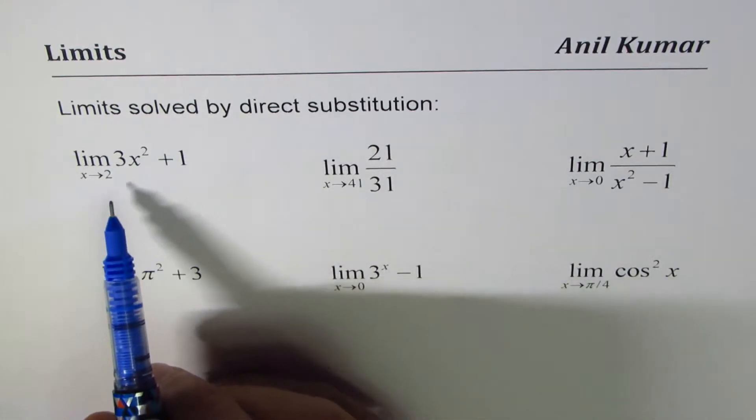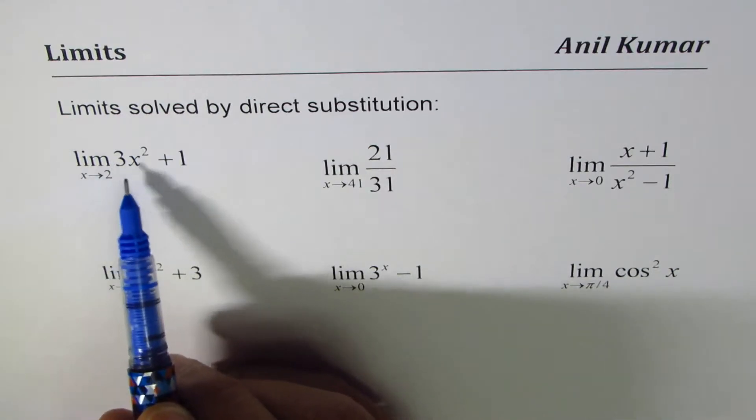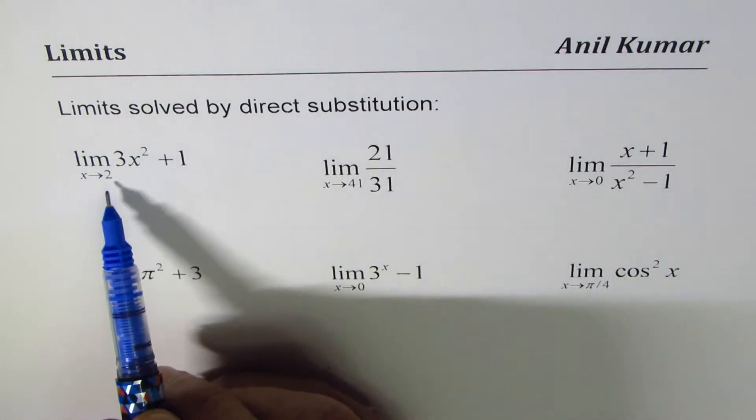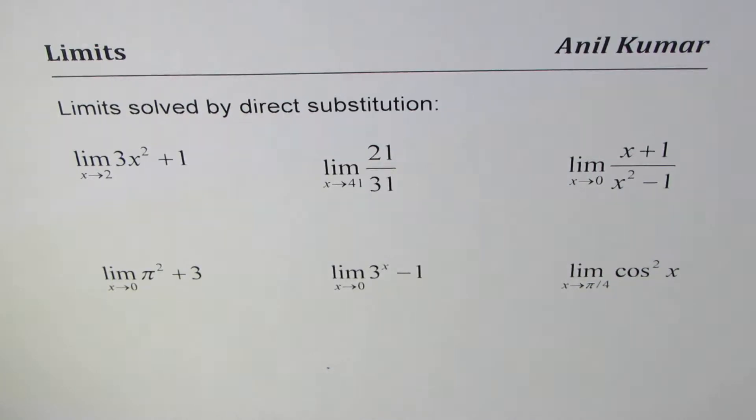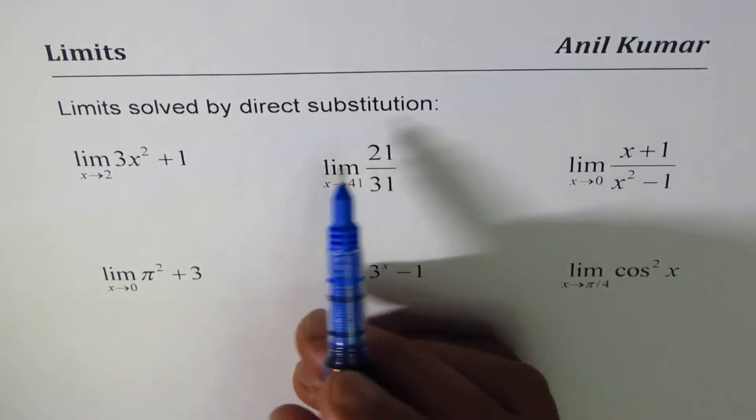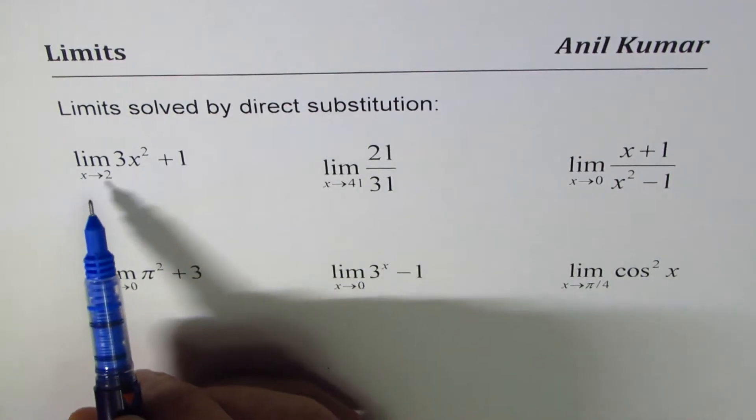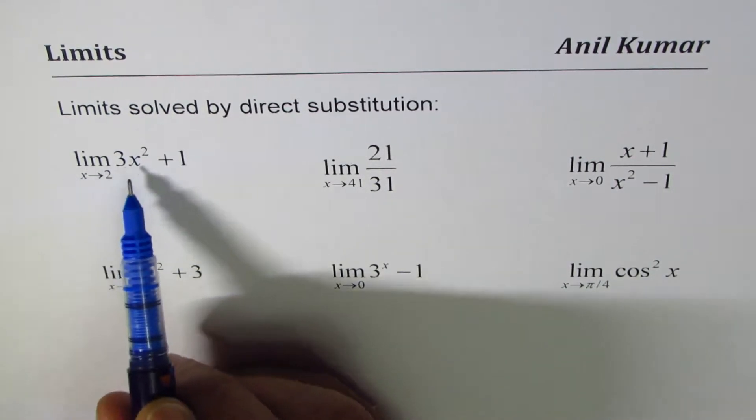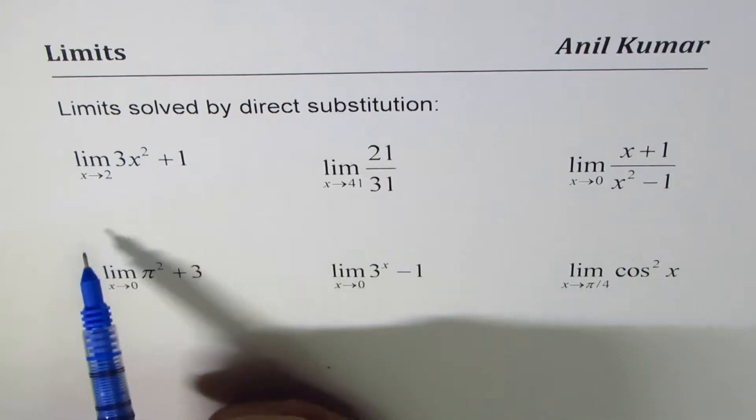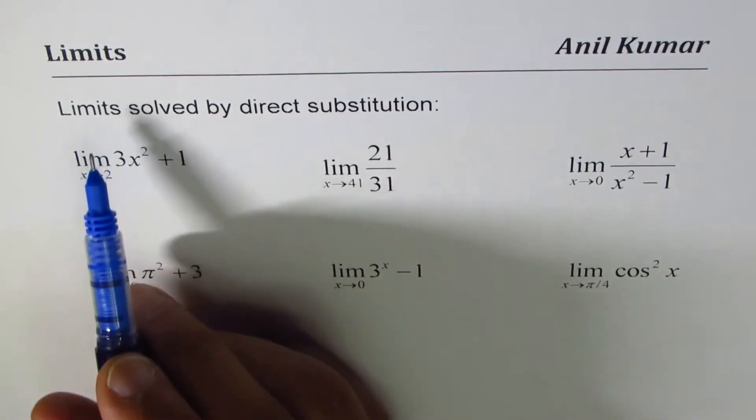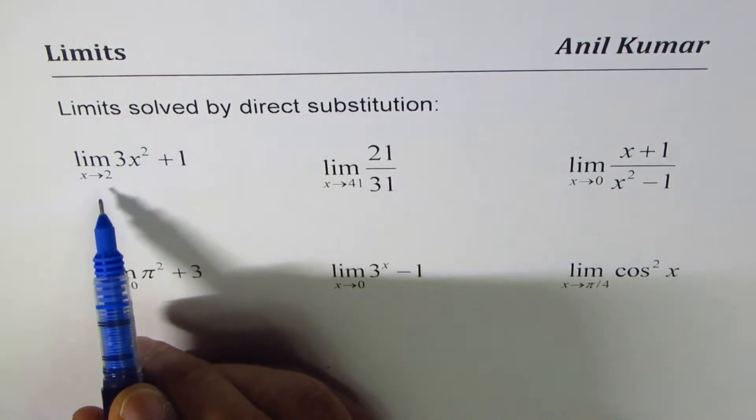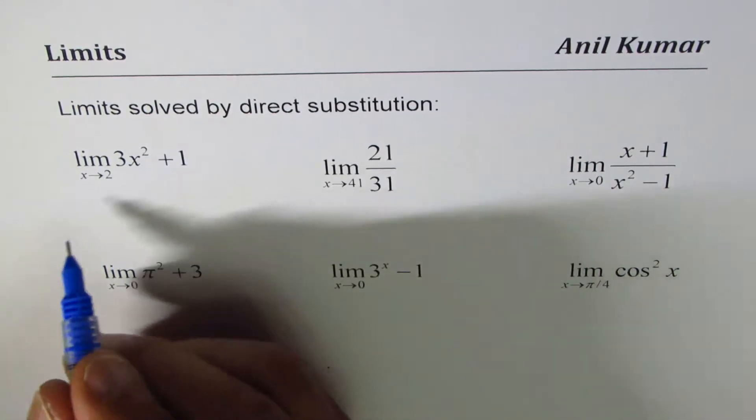Let's take them one by one. The first one here is limit 3x² + 1 when x approaches 2. You can always pause the video, answer these questions, and then look into my video. So have a good look at this and start solving. Direct substitution. The first question is limit 3x² + 1 when x approaches 2. Whenever you have a question on limit, best practice is to substitute and check.